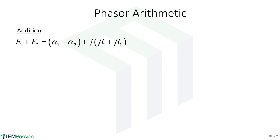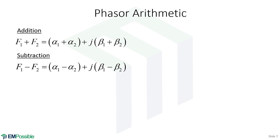Phasor arithmetic. As I mentioned, for addition and subtraction we use phasors in rectangular form. So if F and another phasor are to be added, the real part of the sum is the sum of the real parts of the individual phasors, and the imaginary part of the sum is the sum of the imaginary parts. Subtraction is almost the same: the real part of the difference is the difference of the real parts, and the imaginary part is the difference of the imaginary parts.